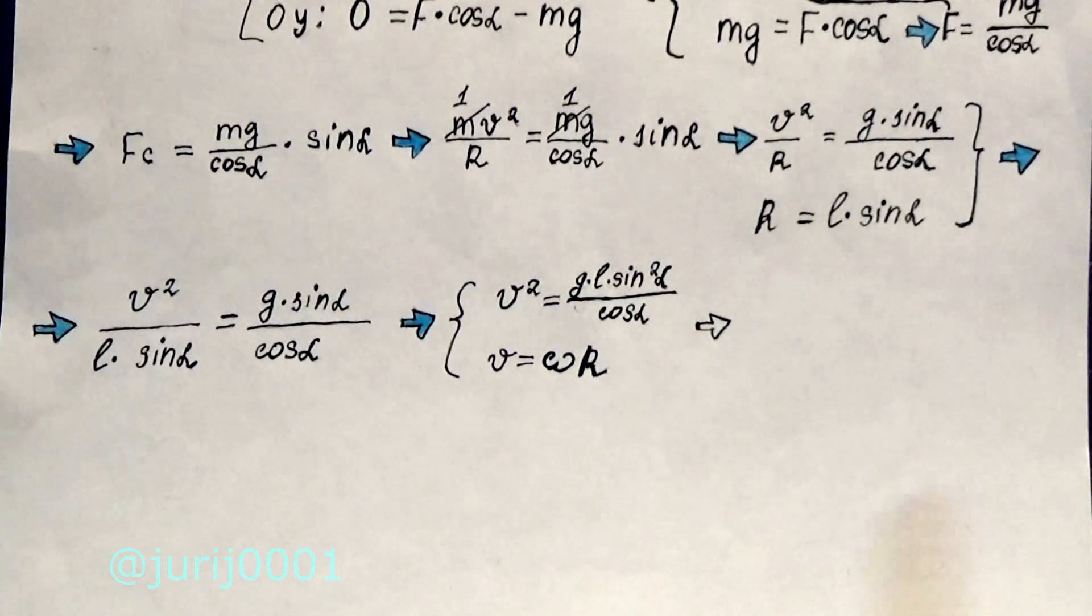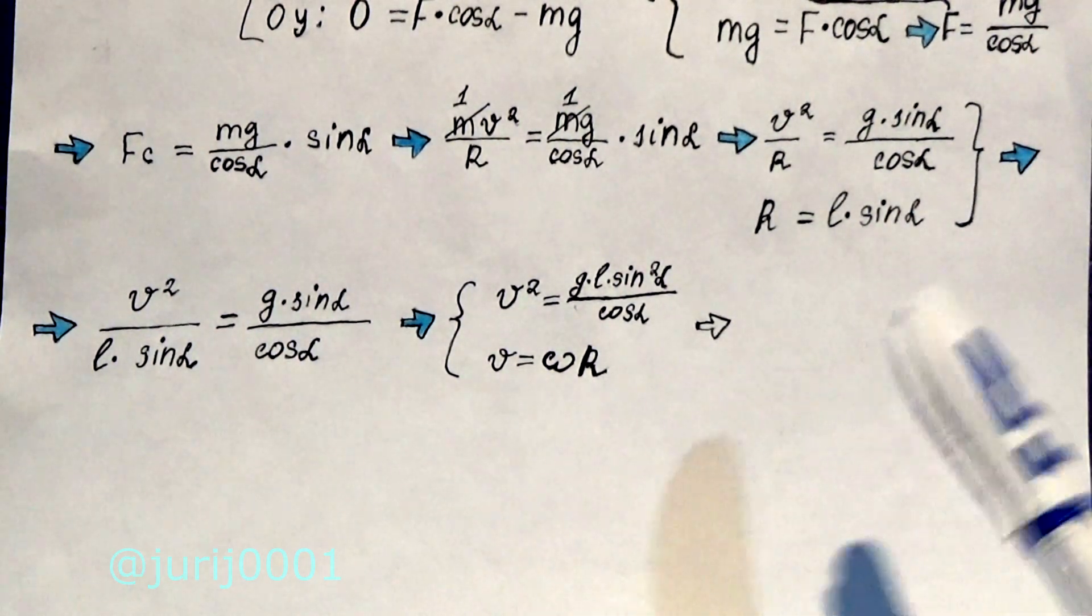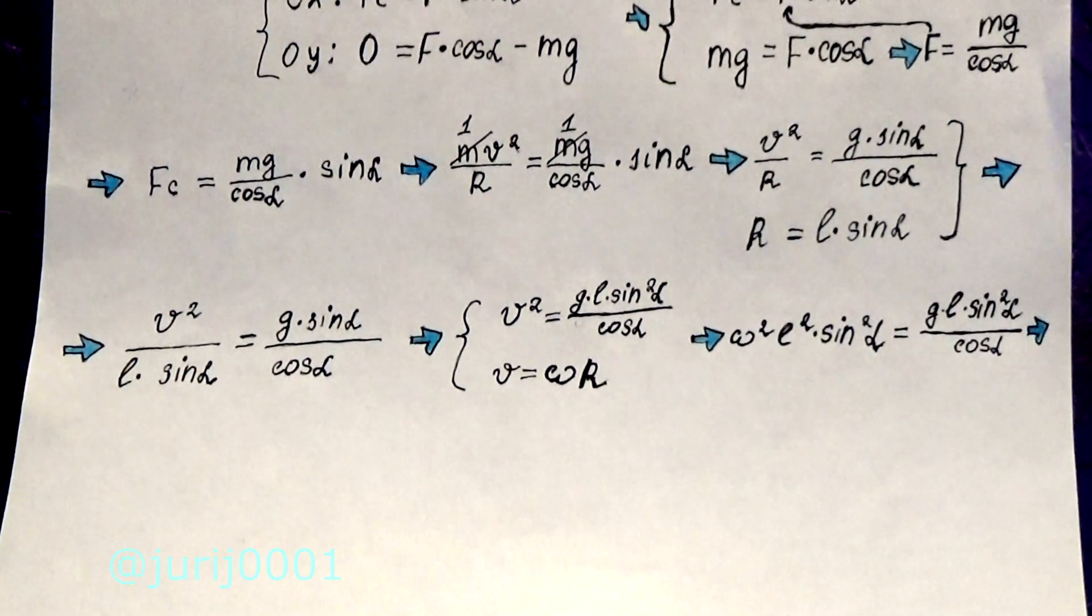We get this transformation, and given the fact that velocity can be expressed in terms of angular velocity and radius, we get some simplifications. I got an equation in which you can reduce some values.